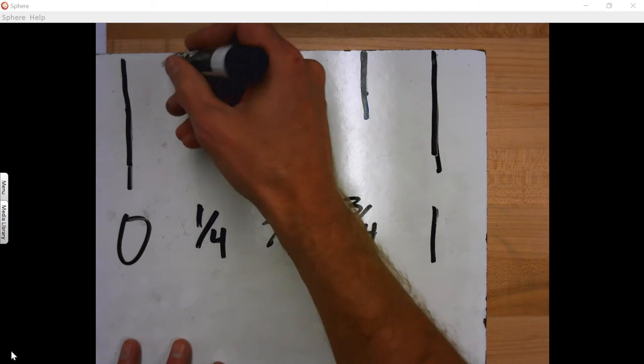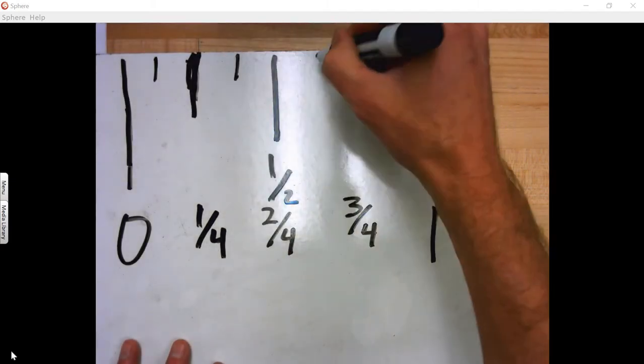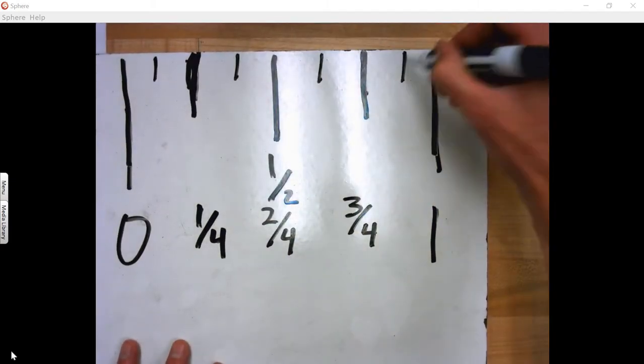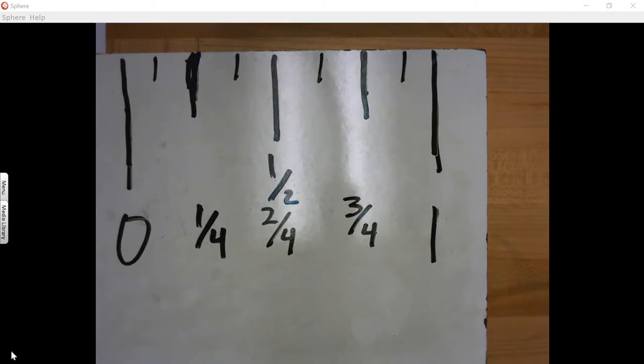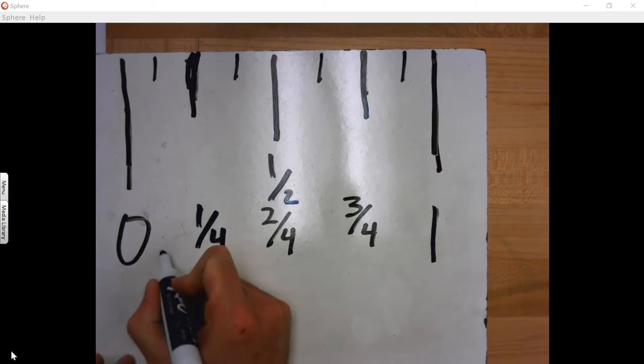Okay? And the next shortest ones are the eighths. So if we call halves halves because they're divided into two, and we call fourths fourths because it's divided into four, why do we call it eighths? Because you're dividing it into eighths, right? So this one is one-eighth.